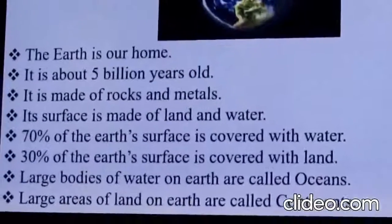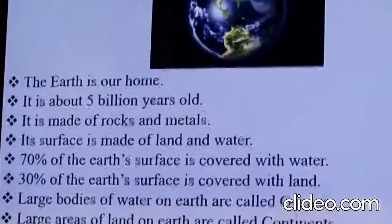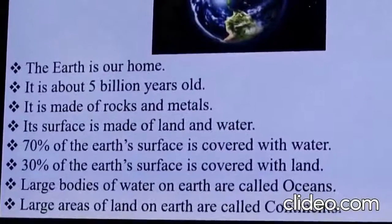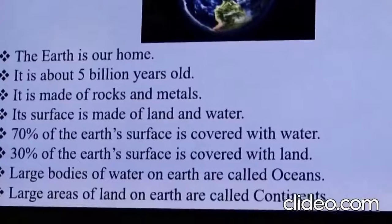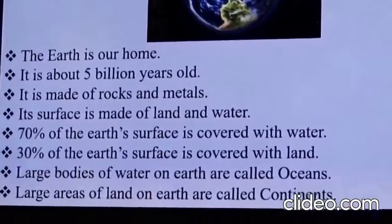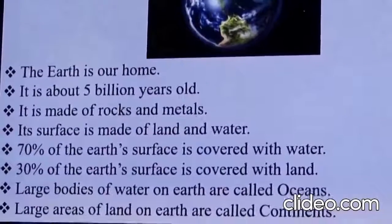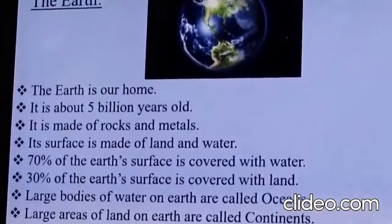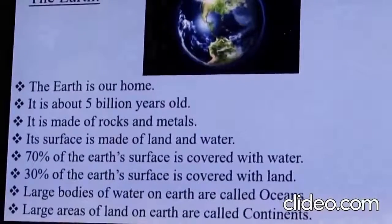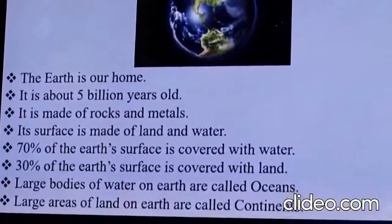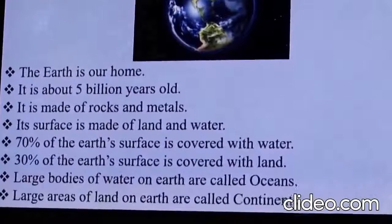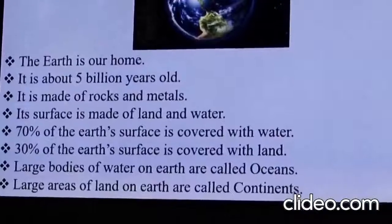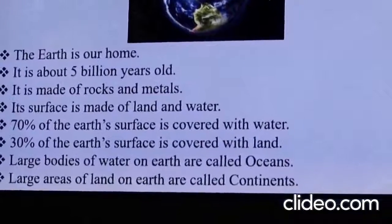The Earth is our home. Scientists believe that the Earth is about 5 billion years old. It is made up of rocks and metals, and its surface has land and water. More than 70% of the Earth's surface is covered with water. The Earth has very large bodies of water called oceans and very large areas of land called continents. Now, let us see them in detail.